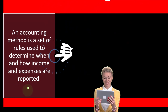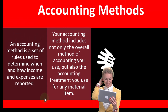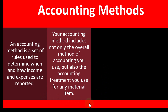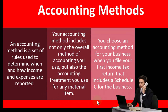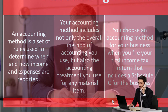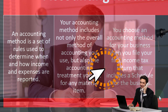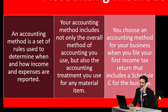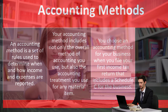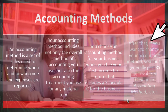An accounting method is a set of rules used to determine when and how income and expenses are reported. Your accounting method includes not only the overall method of accounting you use, but also the accounting treatment you use for any material item. You choose an accounting method for your business when you file your first income tax return that includes a Schedule C. Once chosen, the IRS is going to want you to stick to that accounting method. You may be able to change, but it can be burdensome — you might have to request an accounting method change. If you want to change, you must generally get IRS approval.